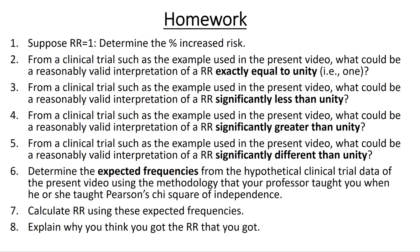Part 6: Homework — Humanized Risk. One: Suppose relative risk equals 1 exactly. Determine the percent increased risk. Two: From a clinical trial such as the example used in the present video, what could be a reasonably valid interpretation of a relative risk exactly equal to unity — that is, one?